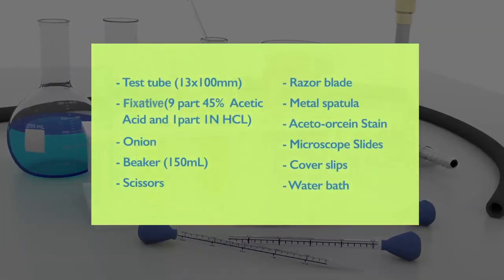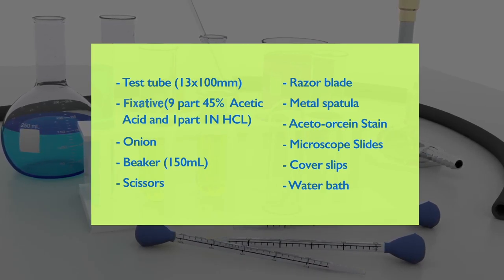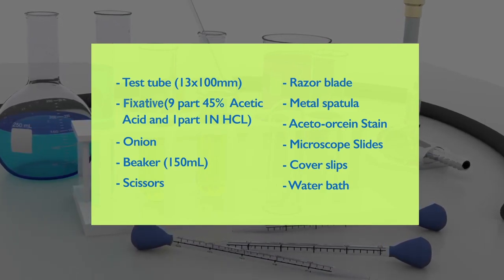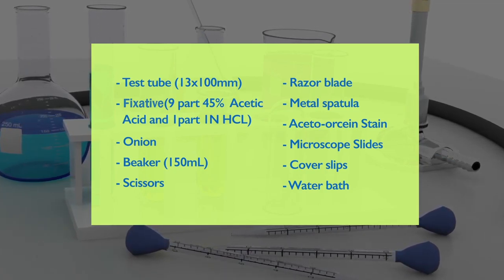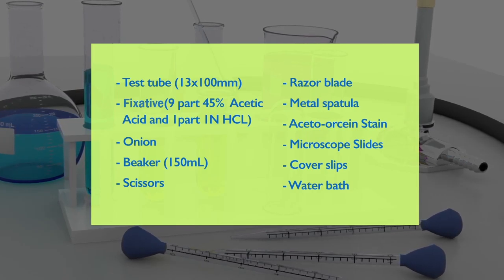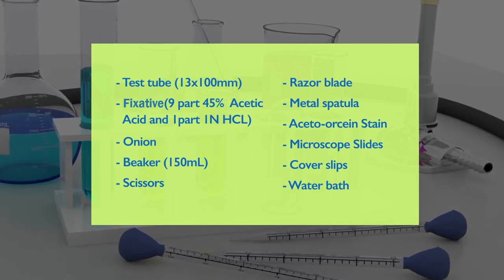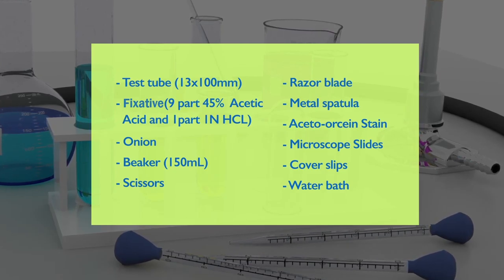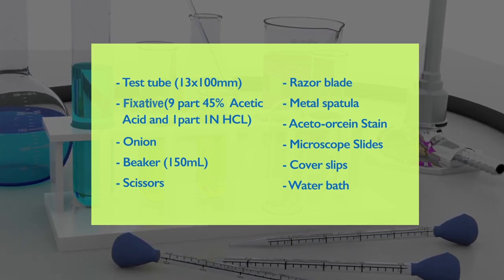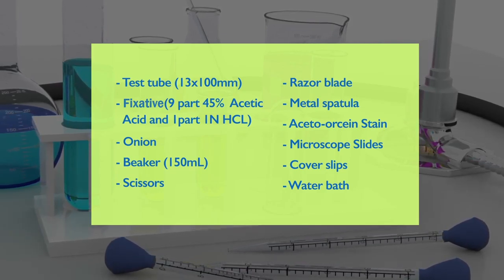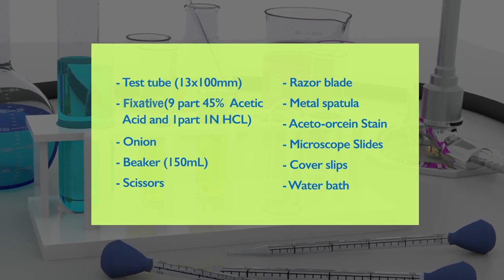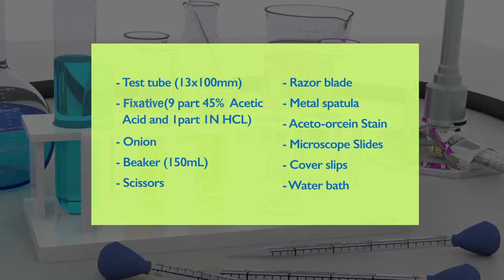Let us now see the materials and reagents required for the experimentation. We need test tubes preferably of 13 x 100 mm size, fixative which is made up of 9 parts 45% acetic acid and 1 part 1 normal HCl, a beaker preferably of 150 ml size, scissors, razor blade, metal spatula, aceto-orcein stain, microscopic slides, cover slips, and a water bath.